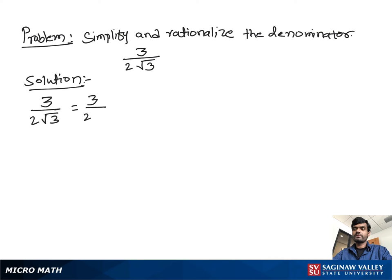To remove the square root sign from the 3, we multiply both the numerator and denominator by square root of 3. This allows us to remove the square root sign from the denominator, giving us 3 times square root 3 over 2 times square root 3 squared.